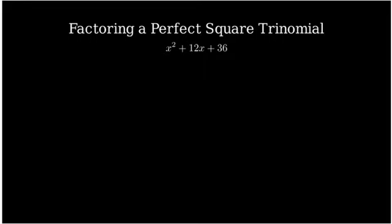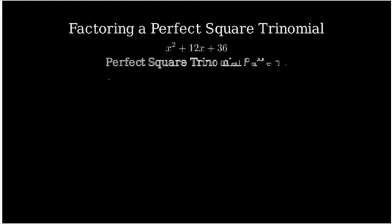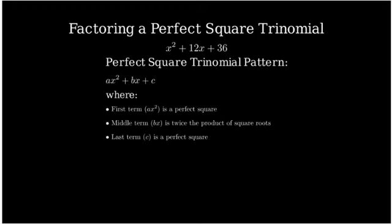Before we start factoring, let's identify the characteristics of a perfect square trinomial. A perfect square trinomial has three terms and follows this pattern. The first term is a squared term, the middle term is twice the product of the square roots of the first and last terms, and the last term is also a perfect square.